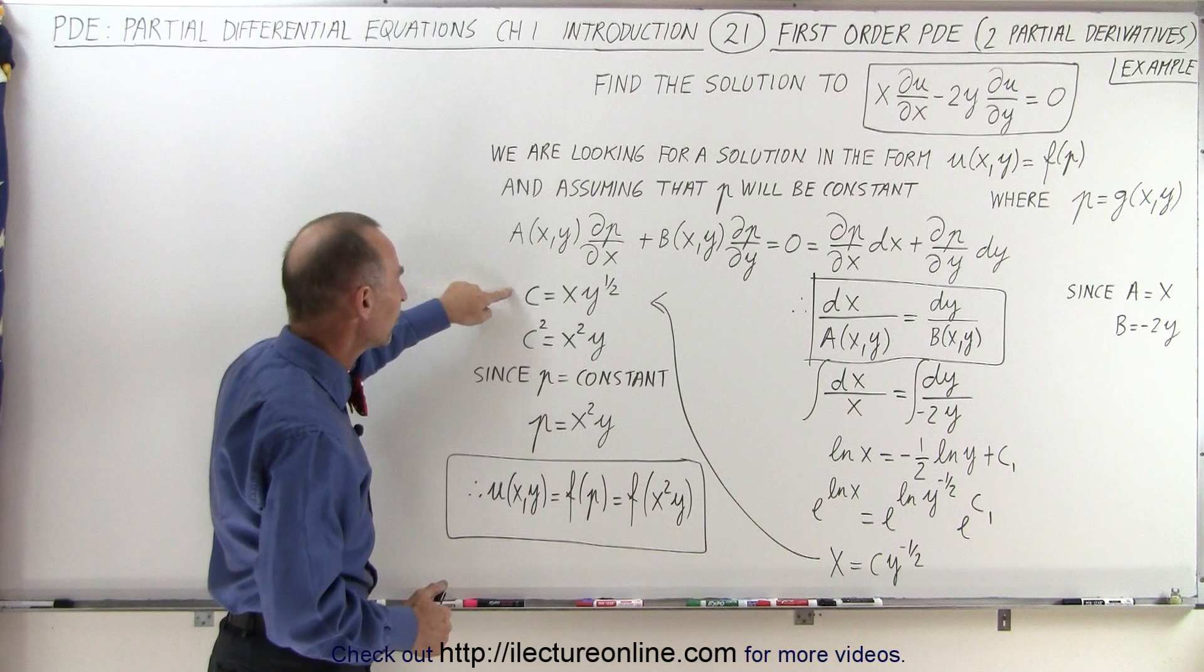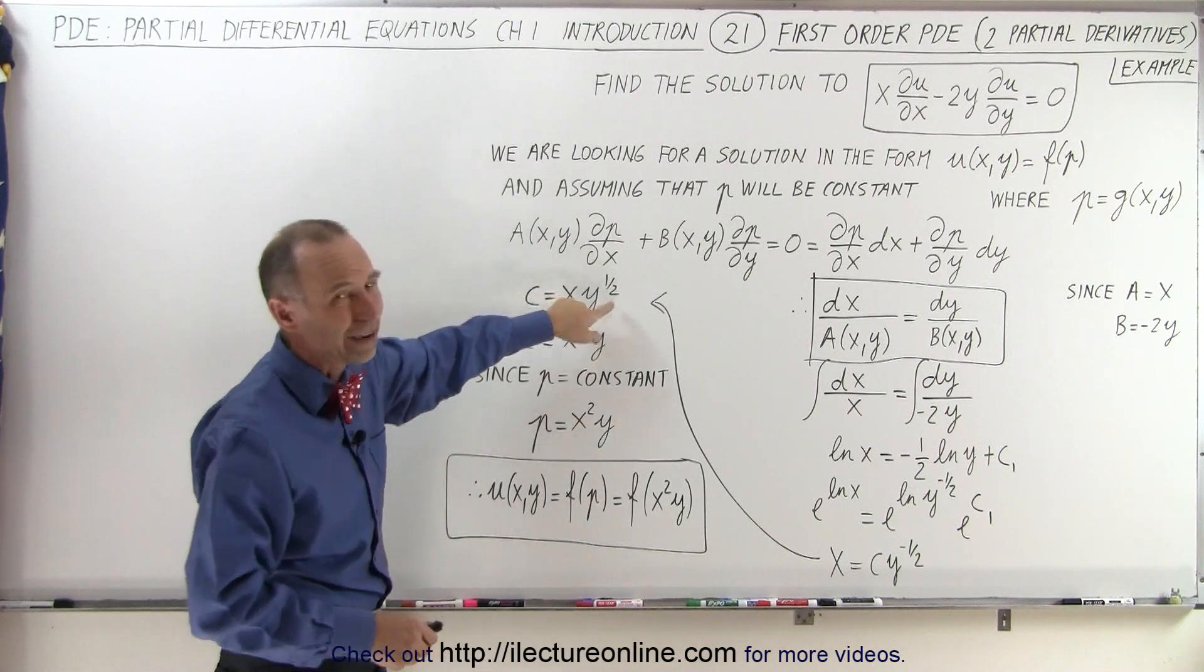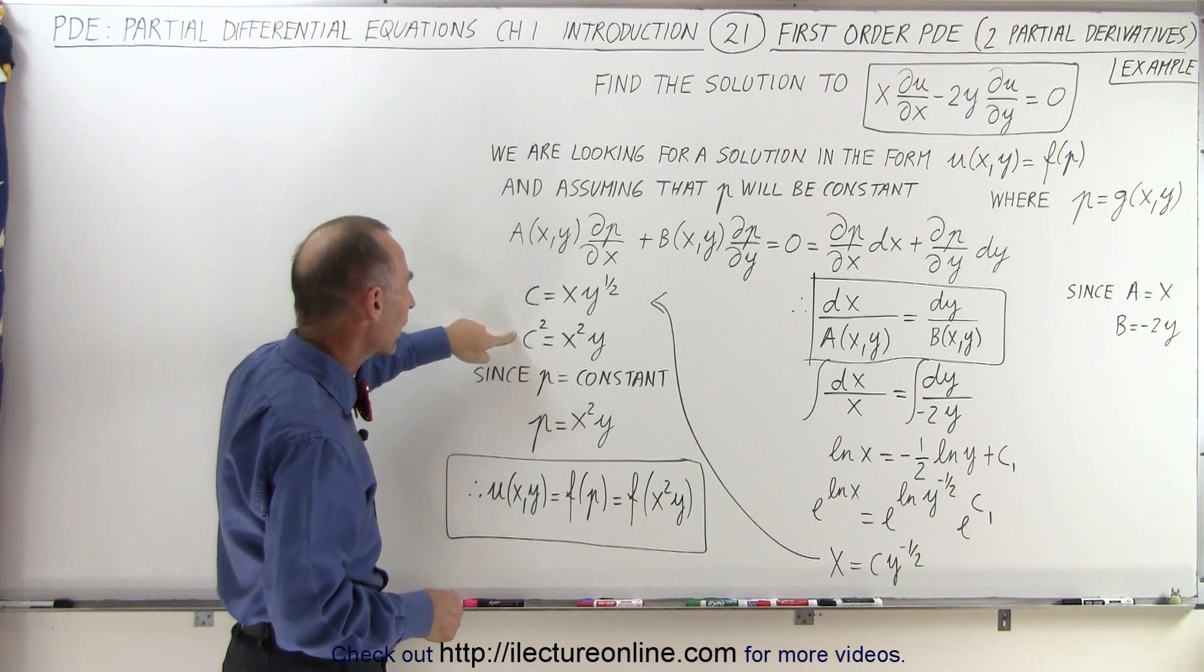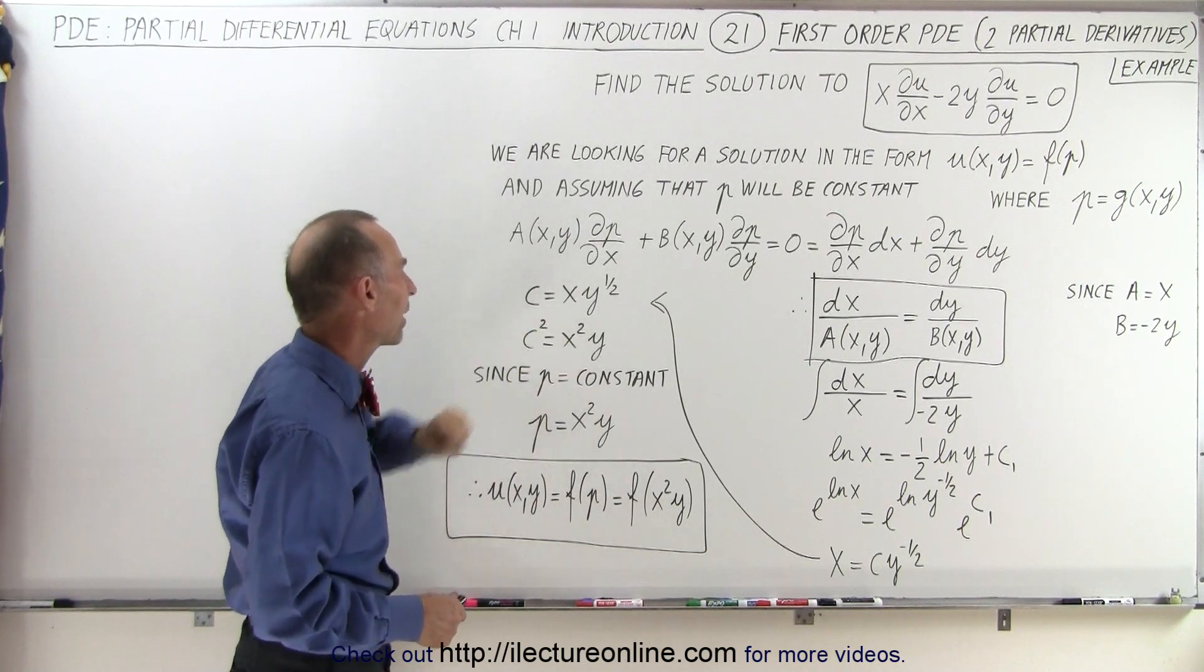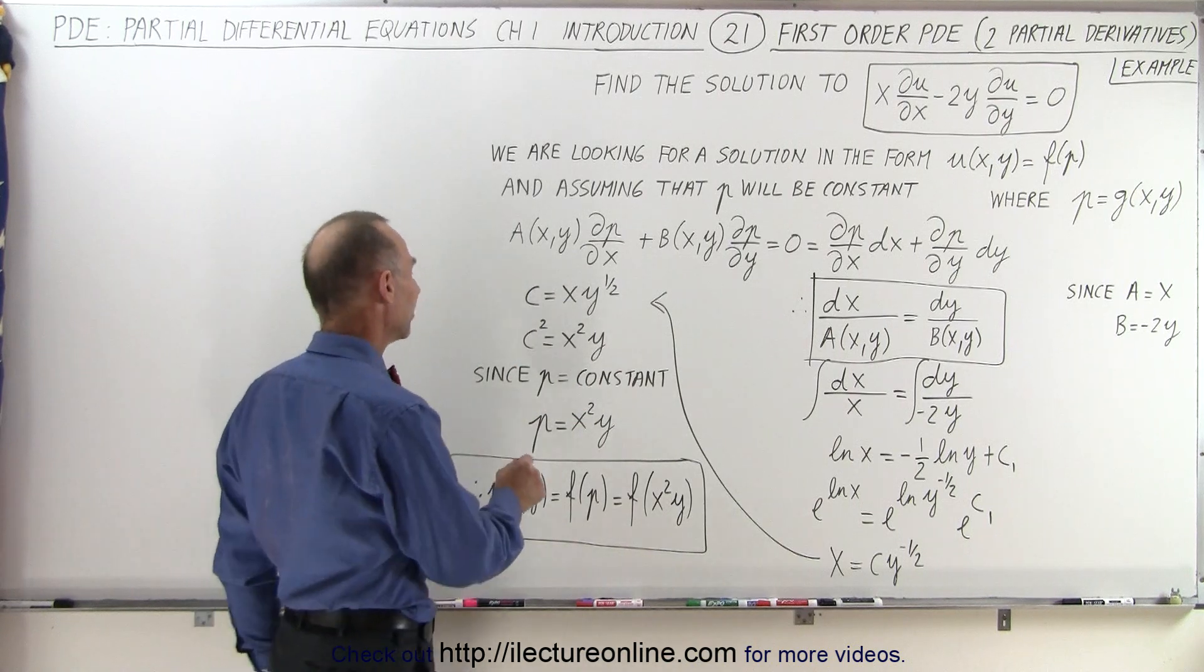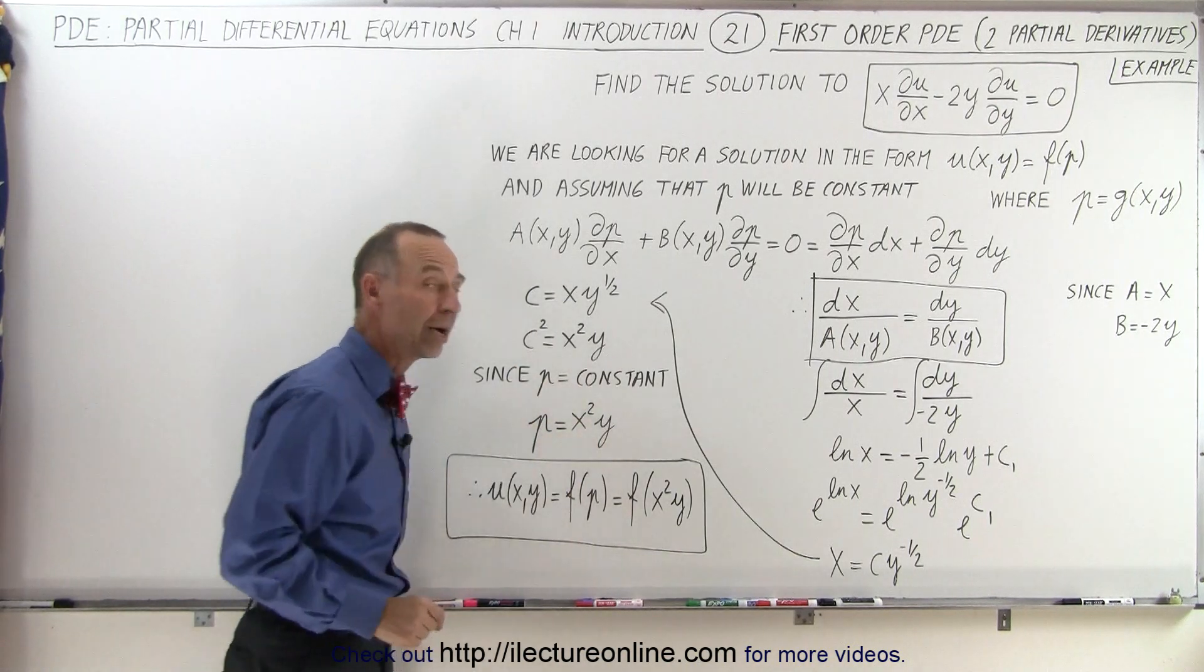So that means that the constant is equal to x times y to the 1 half and to get rid of the 1 half power we'll square both sides so a constant squared equals x squared times y and since p is meant to be constant we can then say that p can be equal to x squared times y.